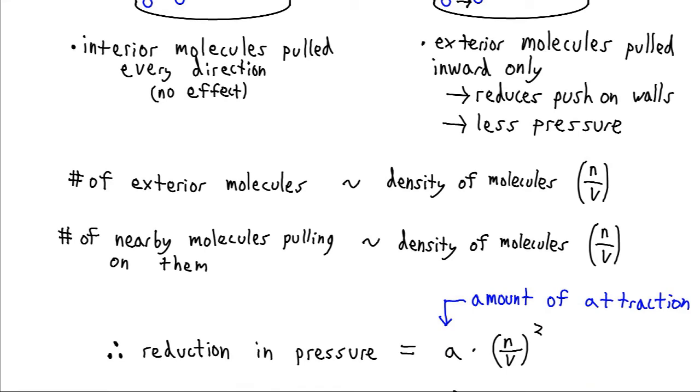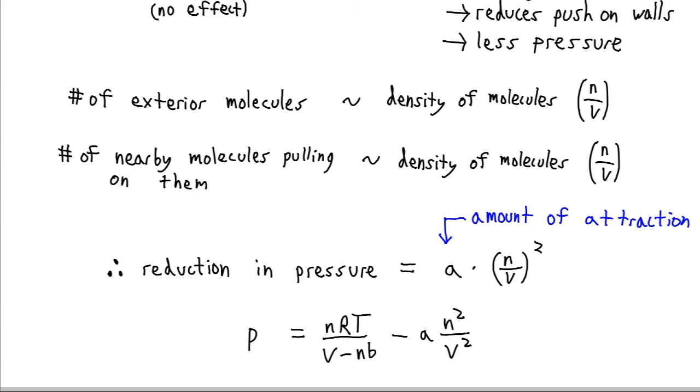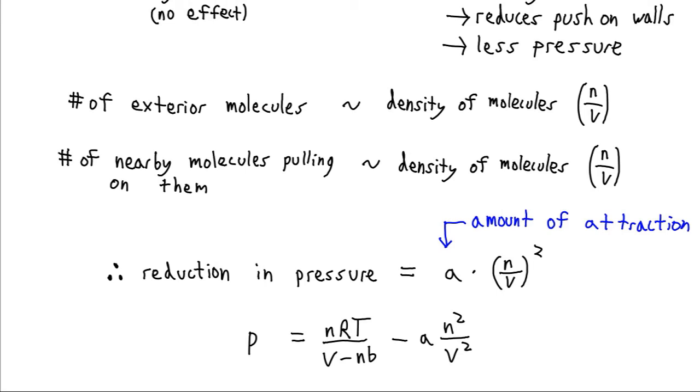And so our reduction in pressure is going to be equal to whatever the average amount of attraction is between molecules. And then it's going to be proportional to the density of molecules in the container twice. Once, because that tells us how many edge molecules there are. And then again, because that tells us how many molecules are pulling on those edge molecules.